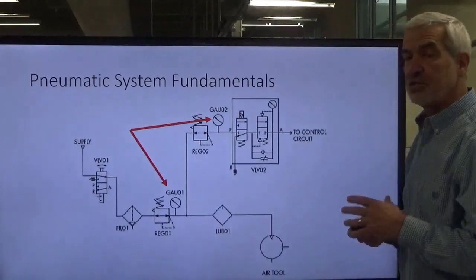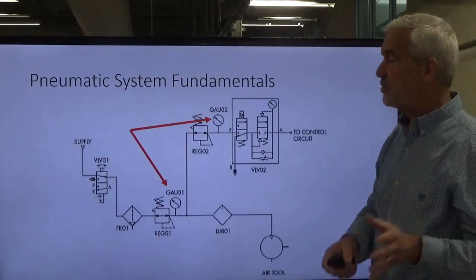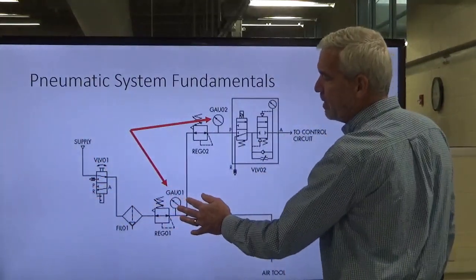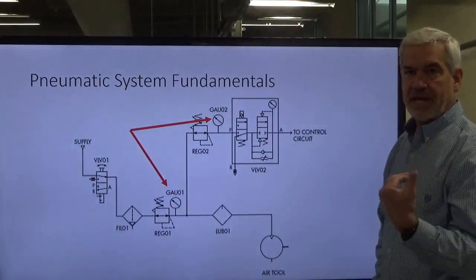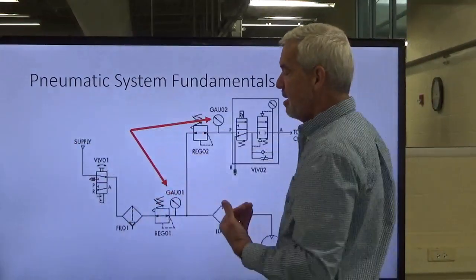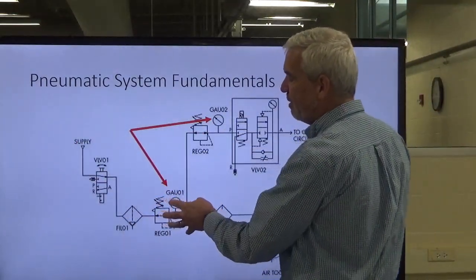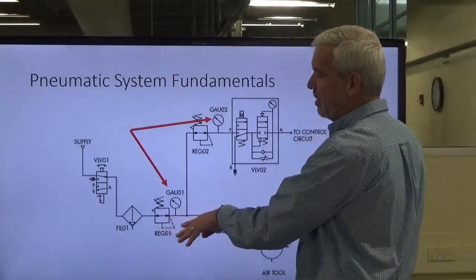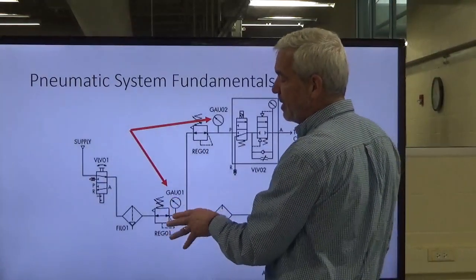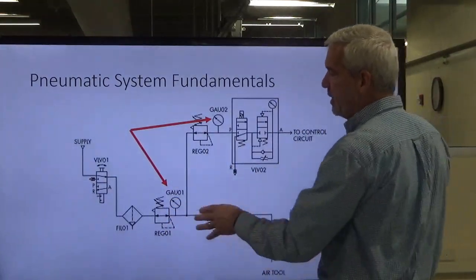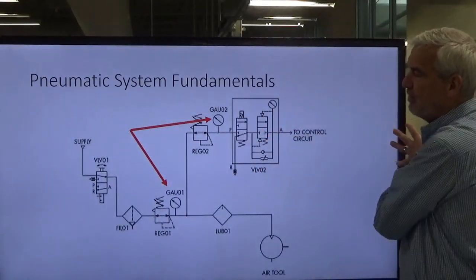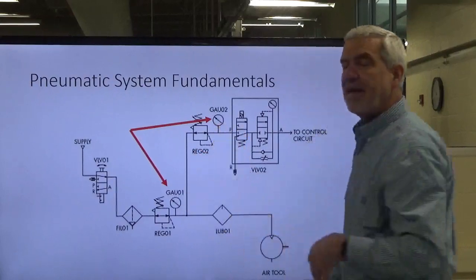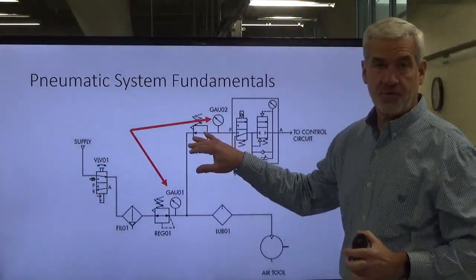You have multiple gauges because you can have multiple pressures within your system. You've got supply pressure coming here, and a regulator that's going to maybe step it down. Say you had 100 PSI, but you're only needing 50 pounds per square inch for the system.